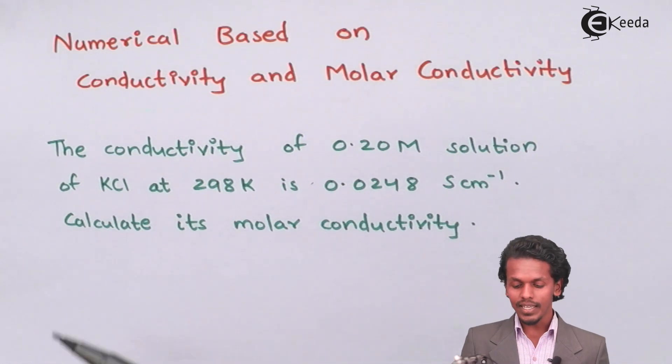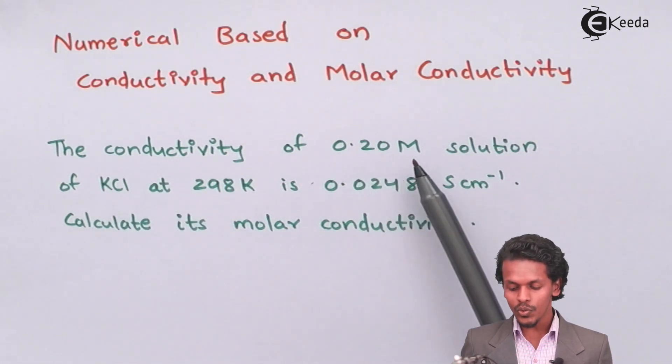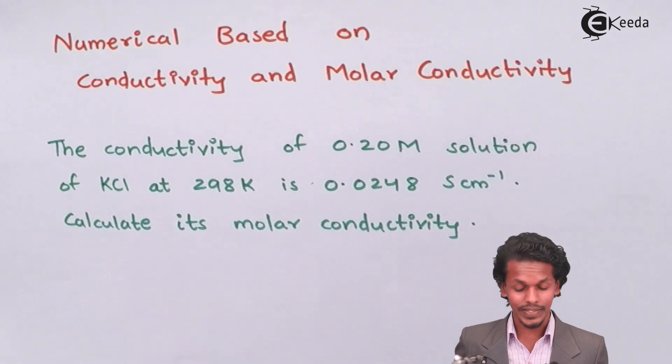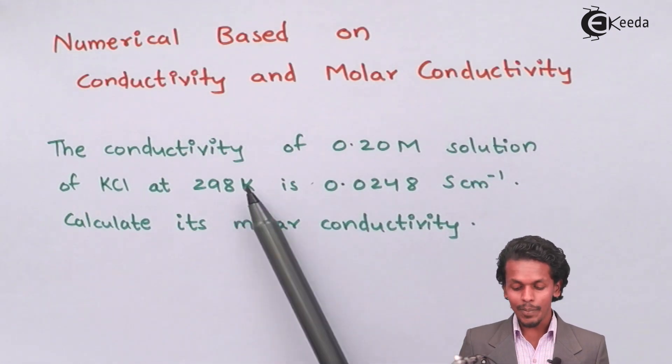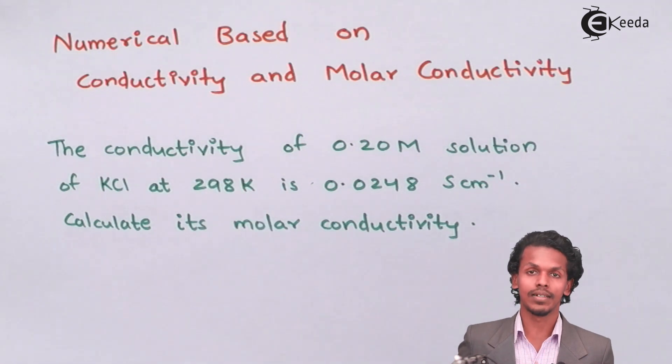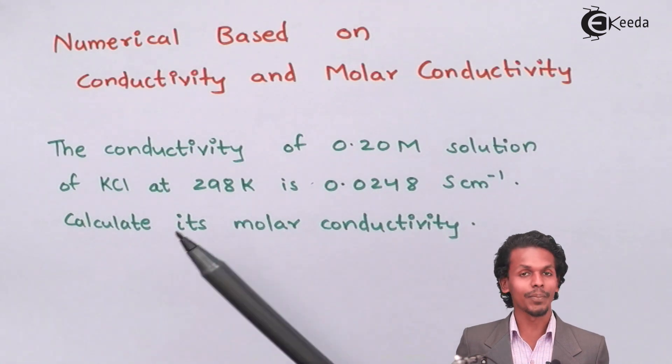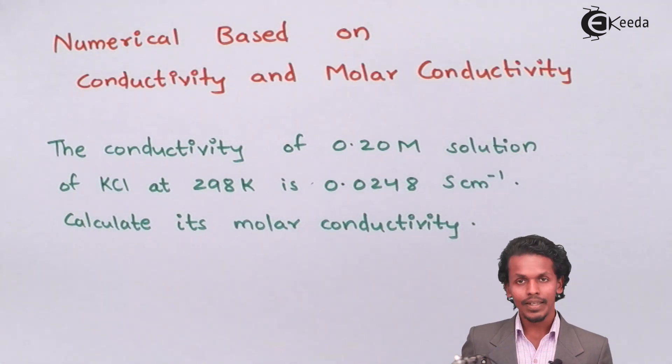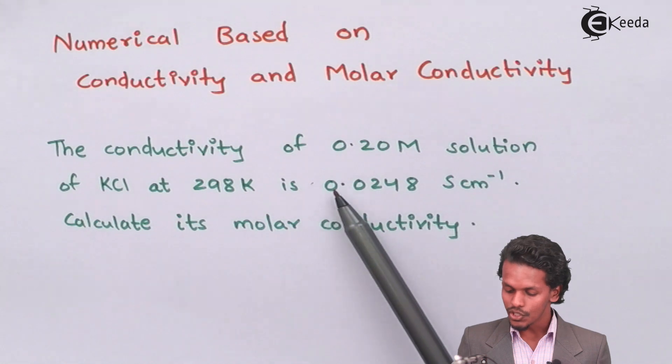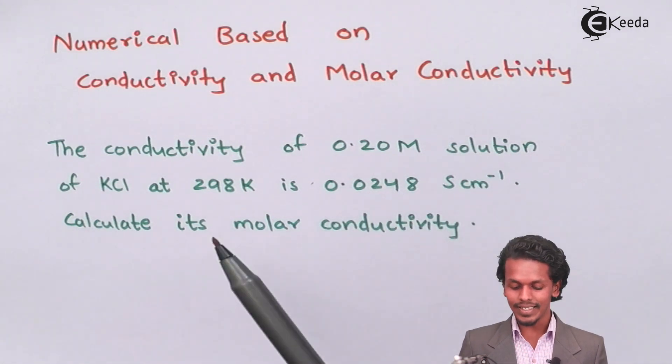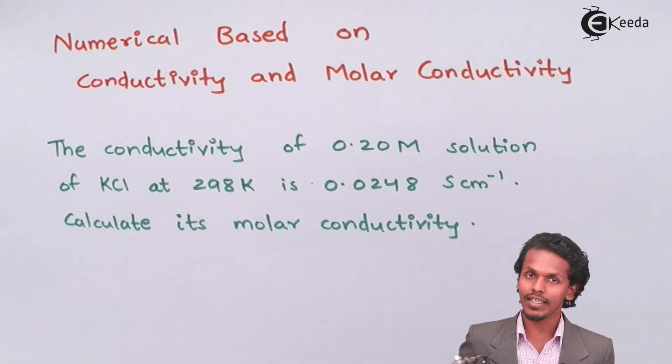Based on this, I could say that 0.20 molar is the concentration they have provided to us. This temperature has no role in the formula, so no consideration is given to this temperature for this instance. And 0.0248 Siemens per centimeter is the conductivity they have provided.